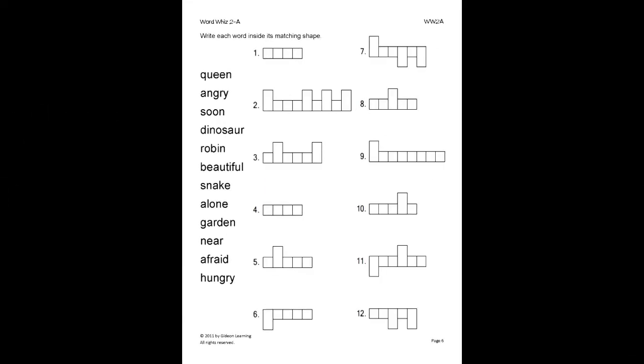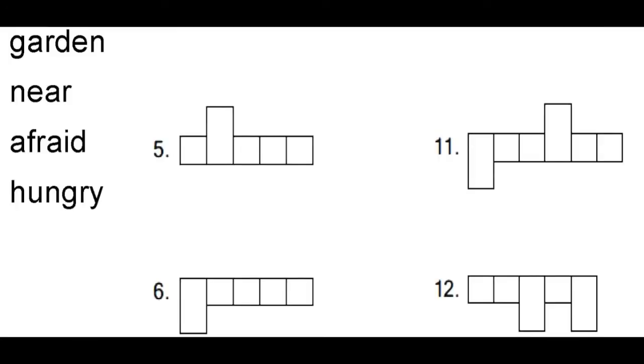Here, the student will write each word inside its matching shape. Let's look at number 11 for example. Number 11 has a long box, two short boxes, a tall box, and two more short boxes. Looking at the words given, we can see that the word garden matches these shapes. So we will cross out the used word and write each letter in its correct place.